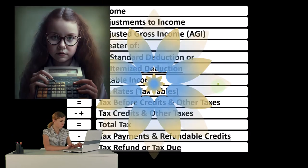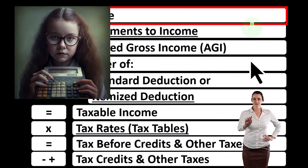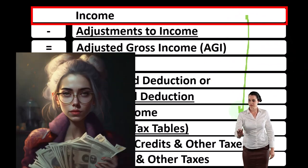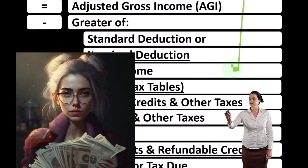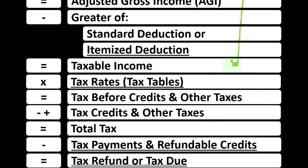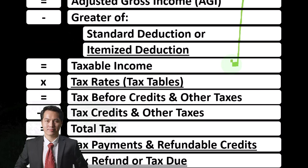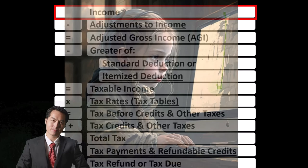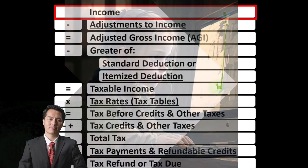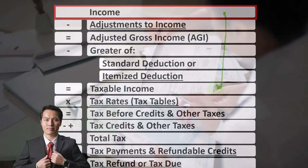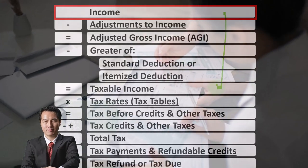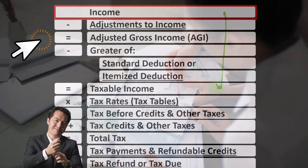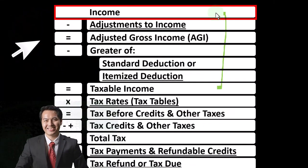Looking at the income tax formula, we're focused on line one, that being income. The first half of the income tax formula is in essence an income statement, although a strange one. This is basically a skeleton format that we can easily visualize, and a lot of other information would be feeding into it from other forms and schedules, basically representing the first page of Form 1040, where we have an income statement type format starting with the income section.